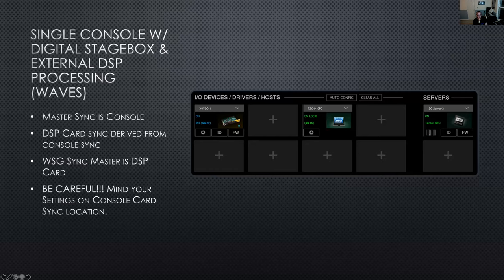Going back to DSP card sync derived from console sync — what we mean by that is that the console generating the master clock source needs to be able to pass that along to any other digital devices connected to it, in this case being our external DSP card I/O. In order for this card to properly see that, there is a setting done in this case. The image here is actually a screen grab from a Waves SuperRack session. The reality is, what that should actually look like: this should not say INT right here. For this to be a properly configured system, that should say DIG — set for digital.